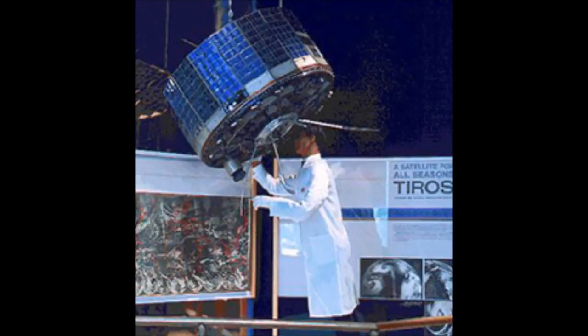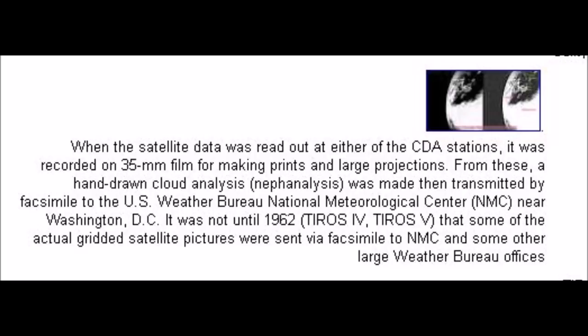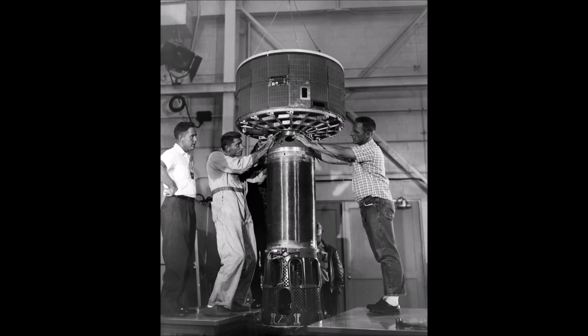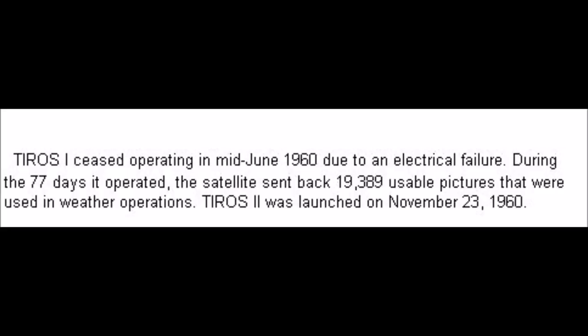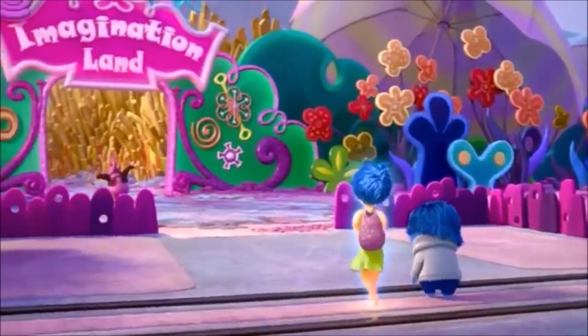Now get this: when the satellite data was read out at either of the CDA stations, it was recorded on 35mm film for making prints and large projections. From these, a hand-drawn cloud analysis was made, then transmitted by fax to the U.S. Weather Bureau National Meteorological Center near Washington, D.C. I don't get why they have to draw these by hand if they have the pictures. It was not until 1962 that some of the actual gridded satellite pictures were sent via fax to the National Meteorological Center. During the 77 days it operated, the satellite sent back 19,389 usable pictures that were used in weather operations — transmitted remotely 400 miles through the vacuum of space and through the entire atmosphere.